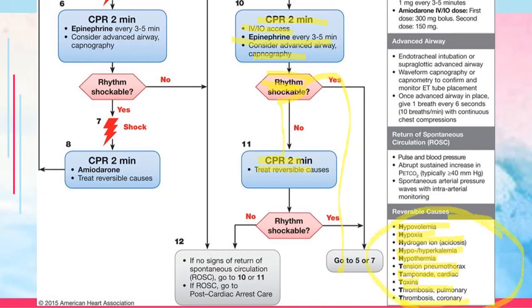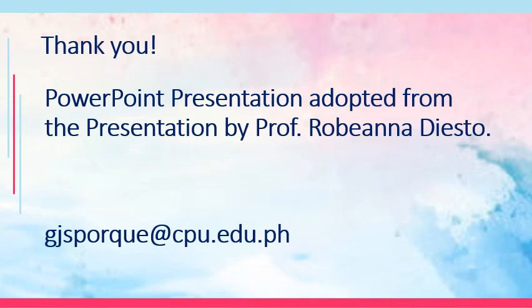One cause not included in the five H's and T's is hypoglycemia. Among patients who have arrested, assess for hypoglycemia and administer D50 water to correct it. The goal is ROSC — return of spontaneous circulation — where you monitor pulse and blood pressure; spontaneous arterial pressure waves with intra-arterial monitoring are usually recommended. This is the post-cardiac arrest care. Thank you for your attention. The outline was adapted from the presentation of Professor Rubiana Chesto. Concerns may be emailed to the address indicated on the PowerPoint presentation.